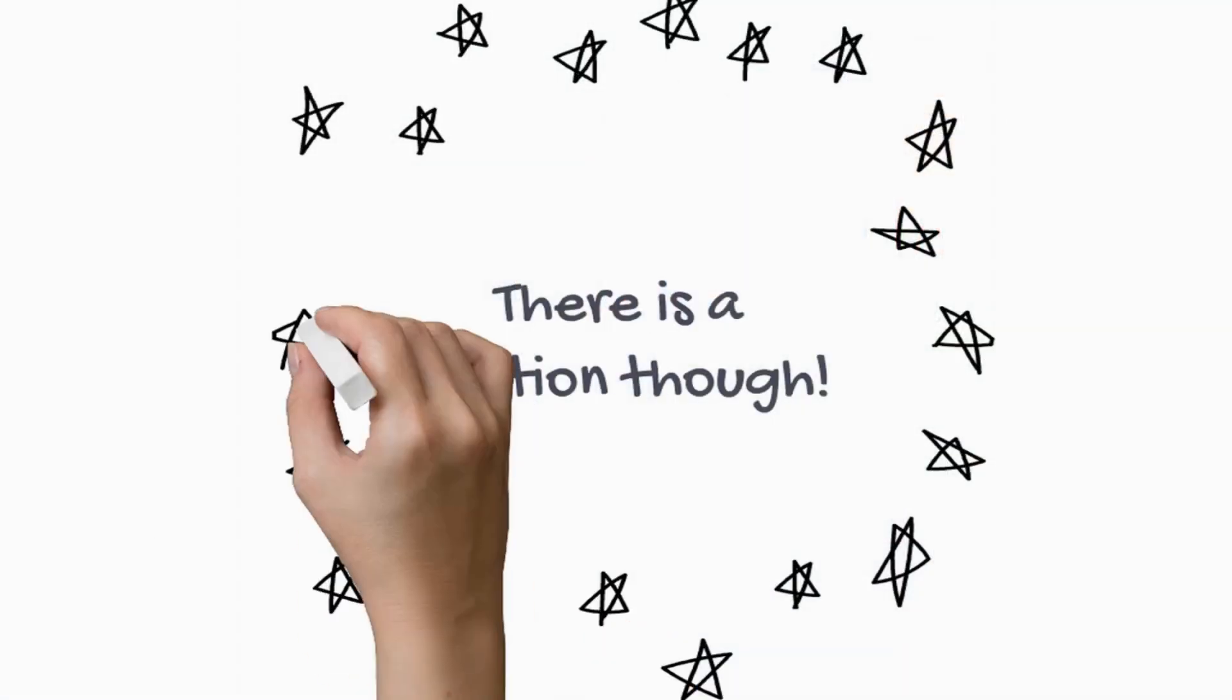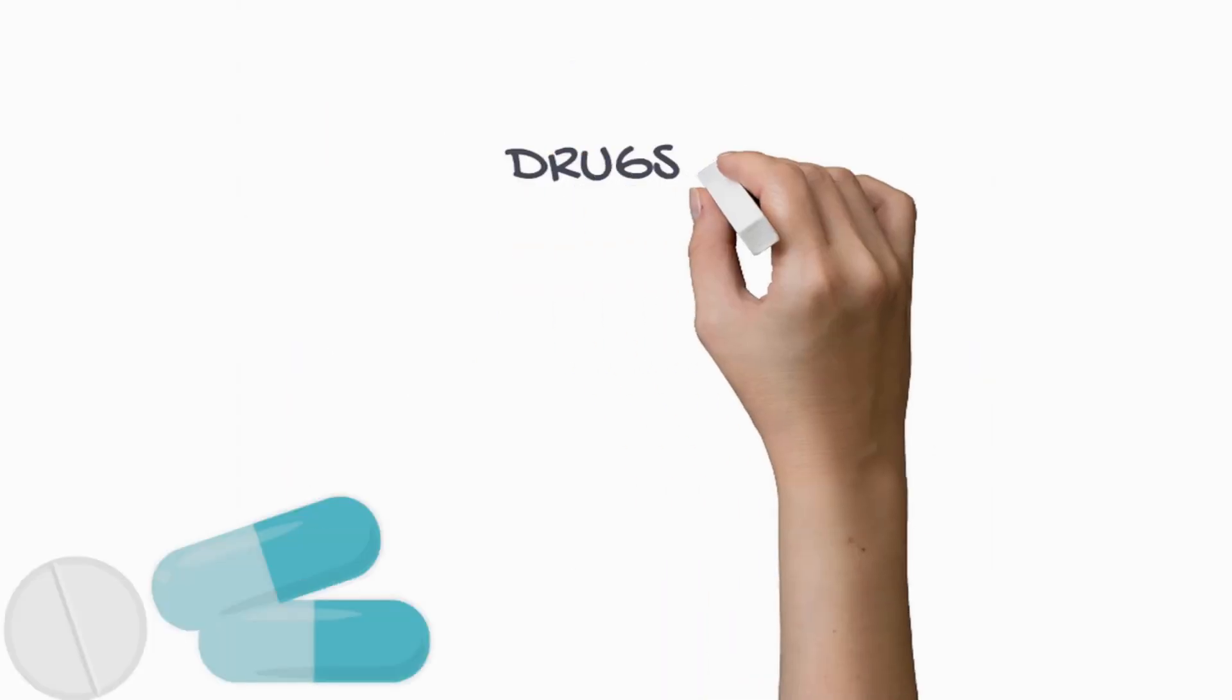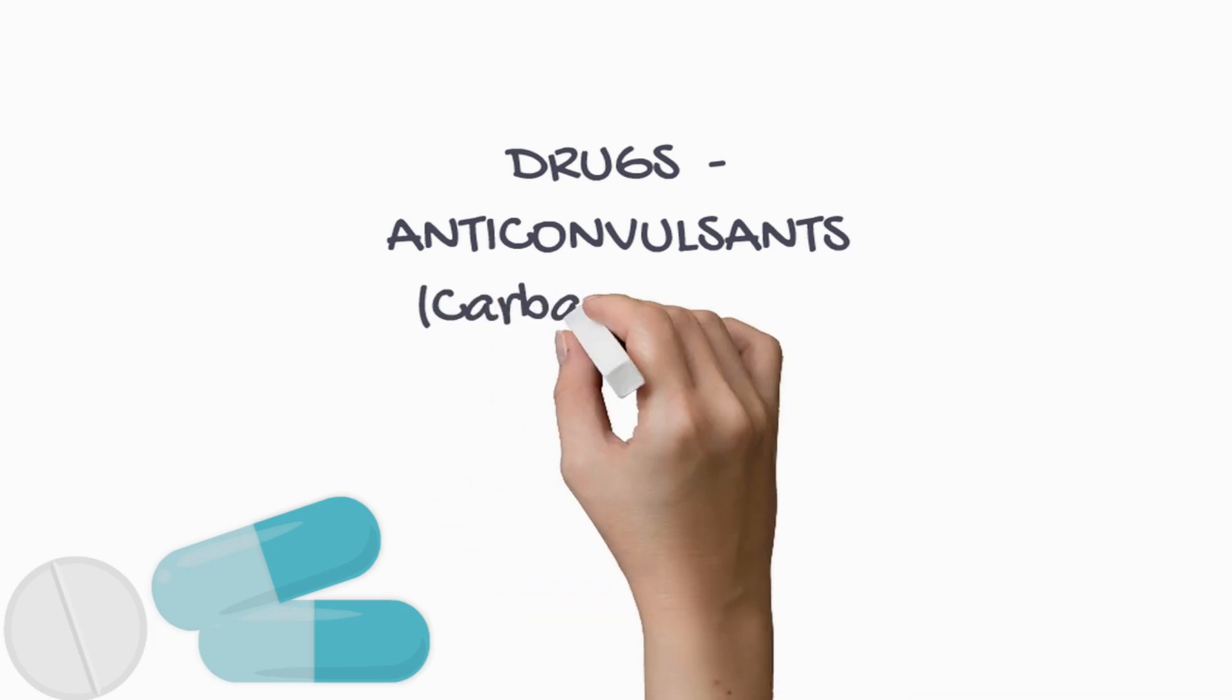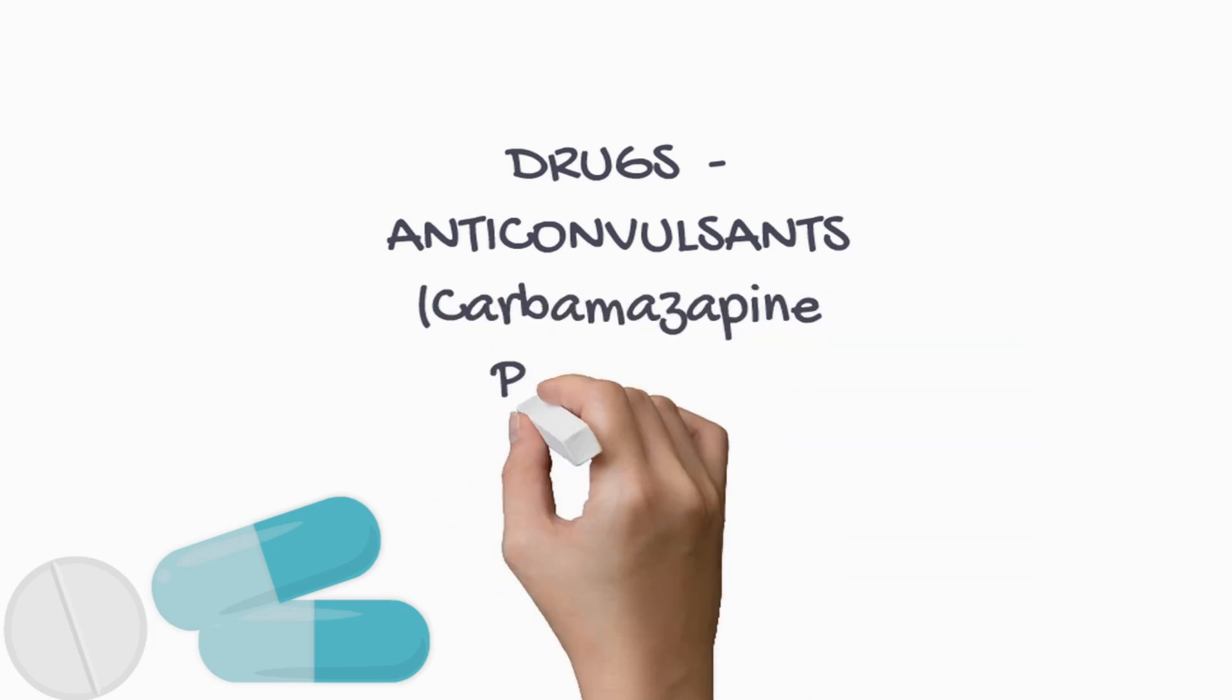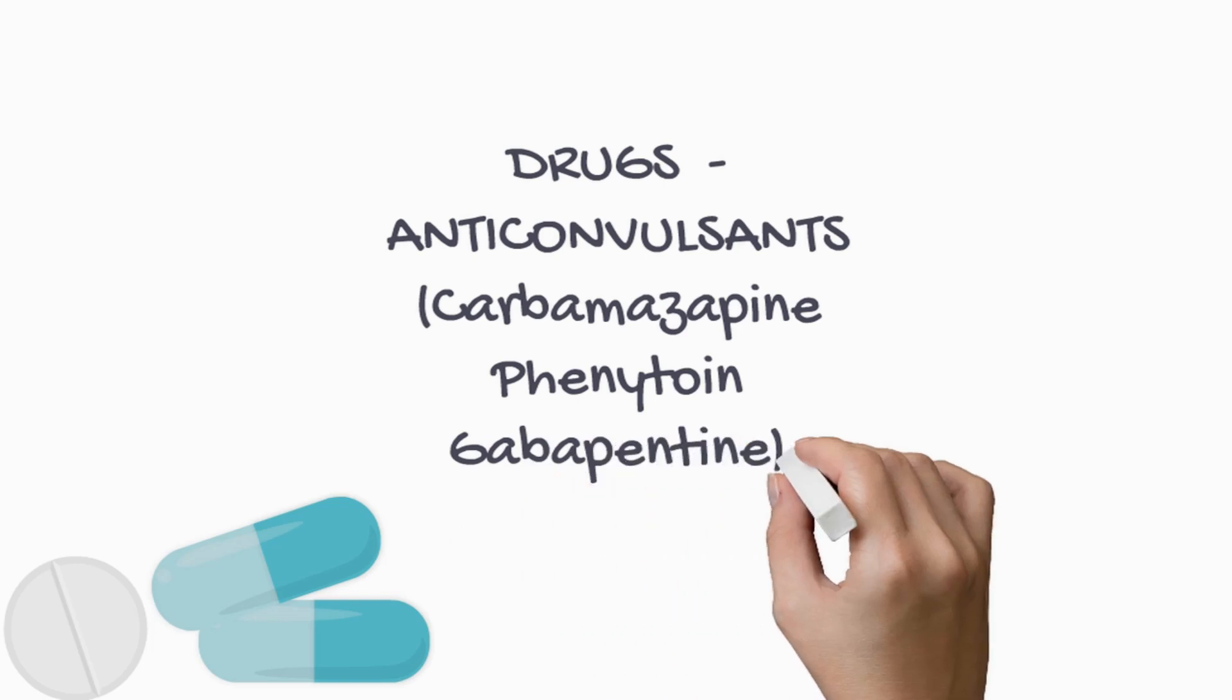Treatment of trigeminal neuralgia can be done in two ways: either with medication or by surgery. Anti-seizure or anticonvulsant drugs like carbamazepine, phenytoin, or gabapentin are the best medication for trigeminal neuralgia.